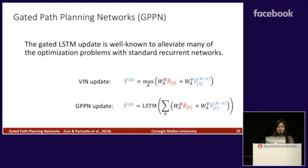The gated LSTM update is well known to alleviate many of the optimization problems with standard recurrent networks. At the end of the day, it's an extremely simple idea — replacing the max pooling nonlinearity with an LSTM nonlinearity — but the performance improvement is significant, as I will show next.